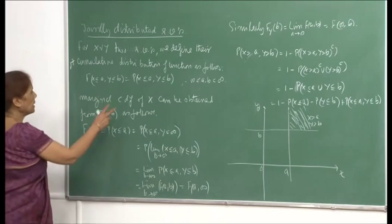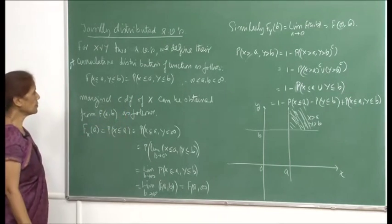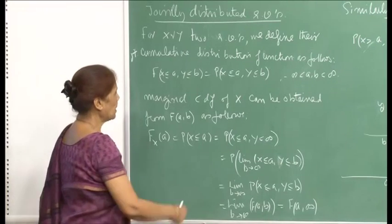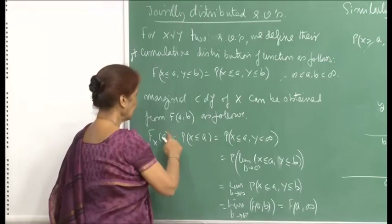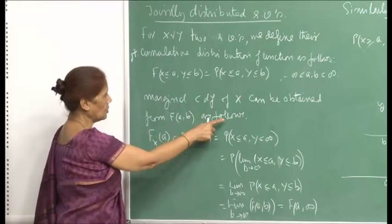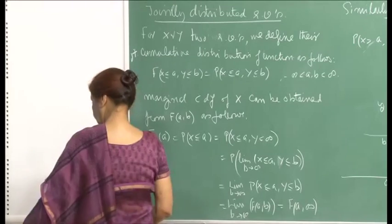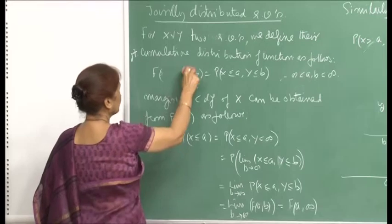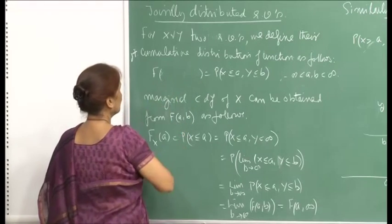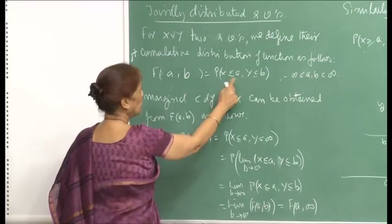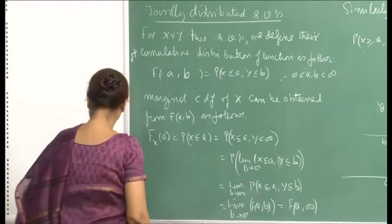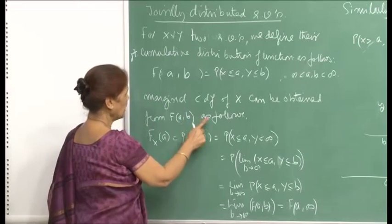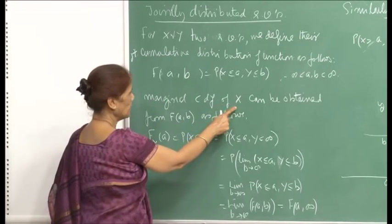The moment you define the joint CDF — the cumulative distribution function — you can talk of the marginal CDF. The marginal CDF of X can be obtained from F(a, b) as follows: F_X(a) = probability X ≤ a, obtained from F(a, b).